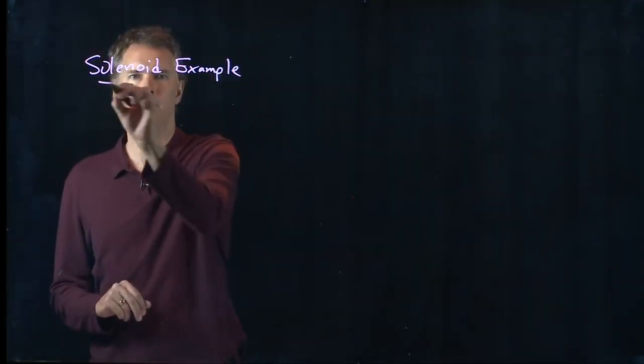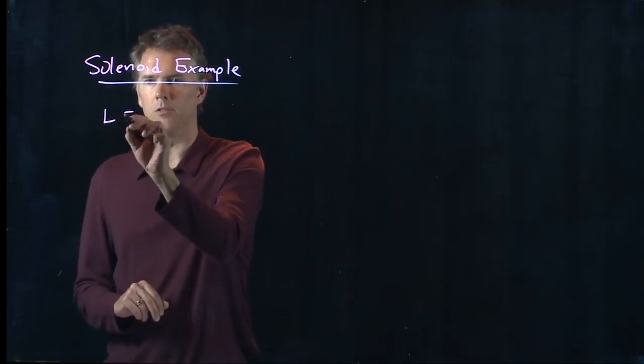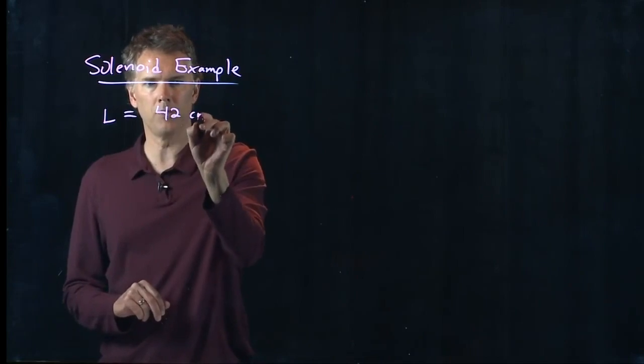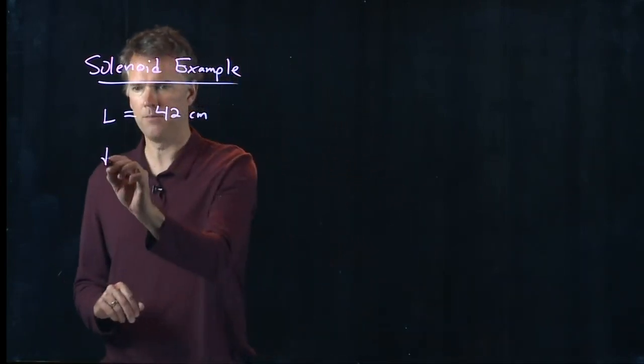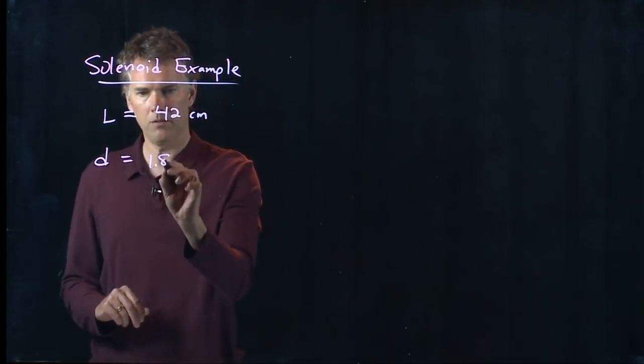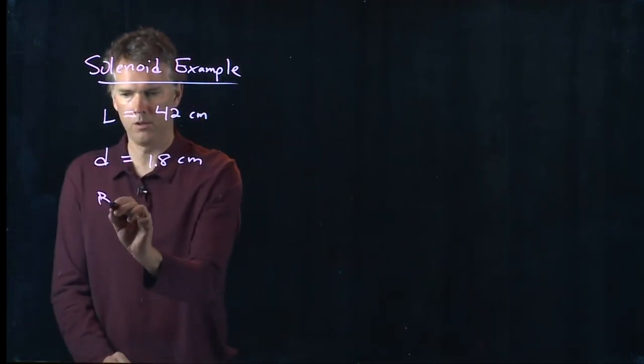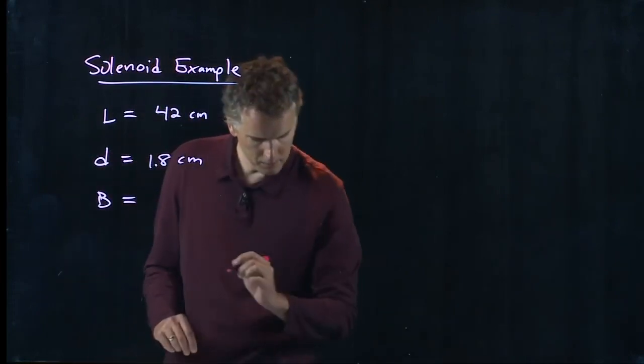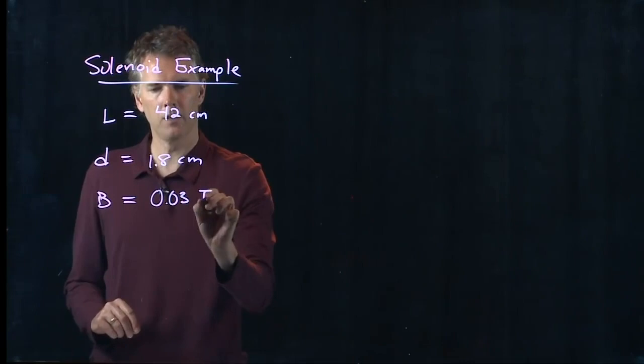Let's use the numbers that I have here. I've got a length of my solenoid which is 42 centimeters, and a diameter of the solenoid is 1.8 centimeters, and we want to produce a B field that is 0.03 Tesla.